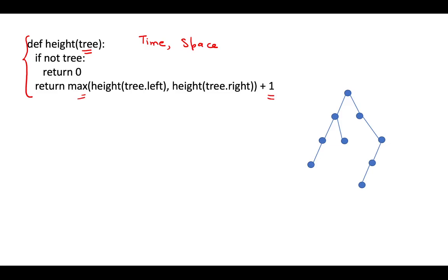Let us quickly run through this algorithm. For any null node, the height will be zero. So when we are at any leaf node, since both its left and right children are none, its own height will be max of 0, 0 plus 1, which is 1. So for any leaf node, the height will be 1.